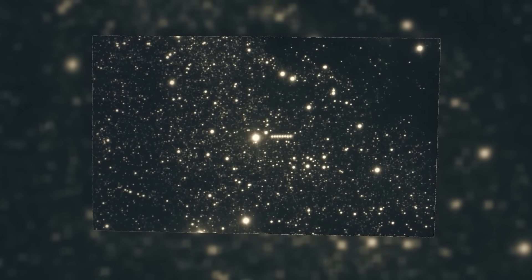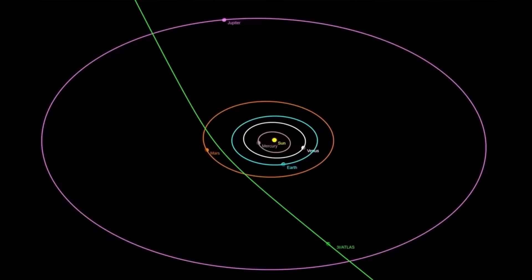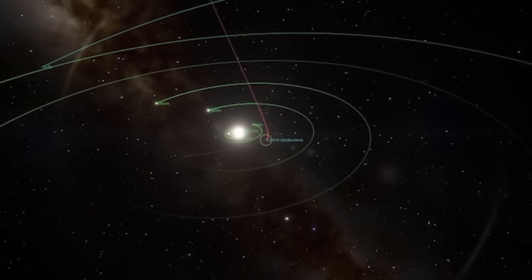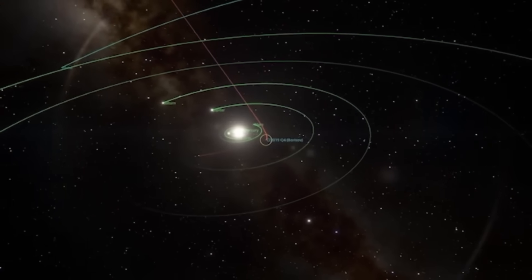It's like finding a creature on Earth that breathes sulfur instead of oxygen. This chemistry tells us that 3i Atlas was born in a place viciously different from our own solar system, a stellar nursery where water was scarce or blasted away by intense radiation, leaving only heavier, stranger ices behind. All our models for how comets in other star systems should form have been thrown out the window.